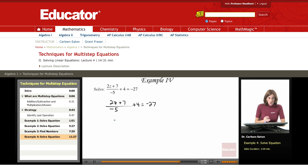Therefore, we're going to start by subtracting 4 from both sides to eliminate that 4 and to isolate the variable.